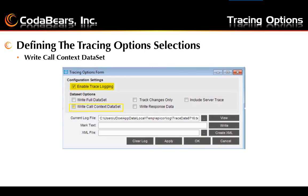Write call context dataset: check this box to write the call context, mostly if you want to troubleshoot business process management BPMs. When a user encounters a BPM form or a BPM directive, the call context dataset information is available and is then recorded in the trace log.